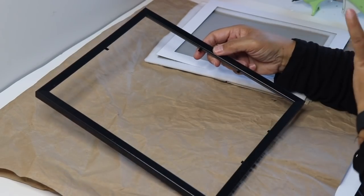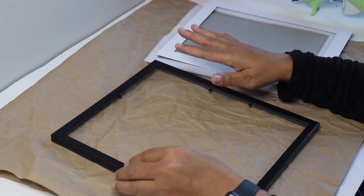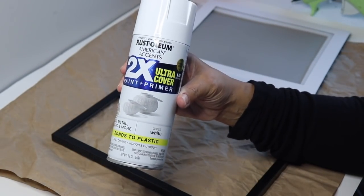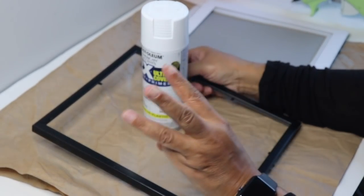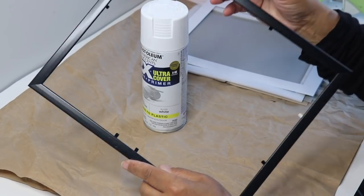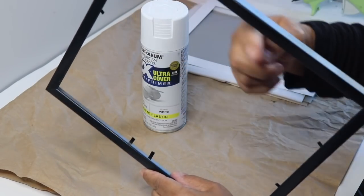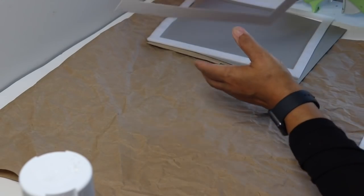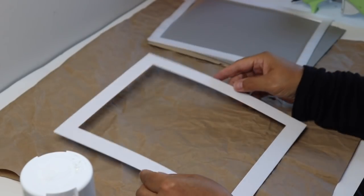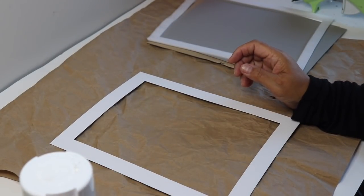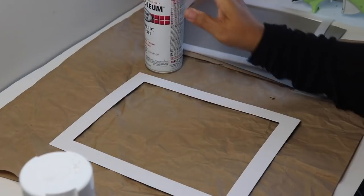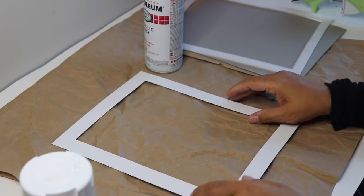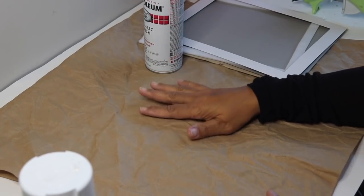This frame is black now, so I'm going to use this Rust-Oleum spray paint to spray paint my frame white. Since the frame is black, I'm going to spray on three layers of the white spray paint on the inside and outside of the frame. I'll also be using the border that's included and spray painting it gold. I'll take both pieces outside to spray paint them and then come back.